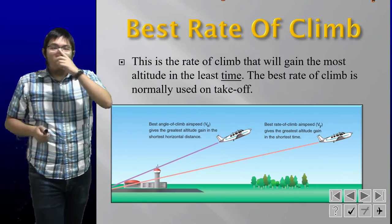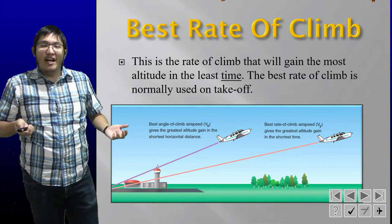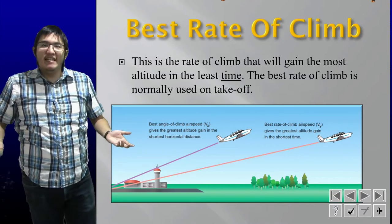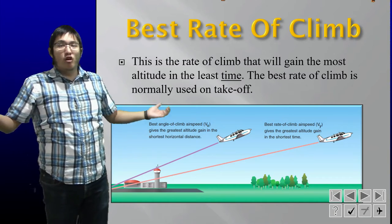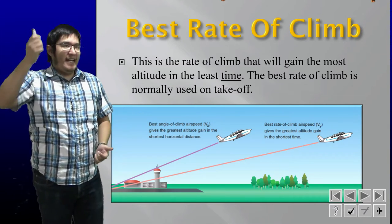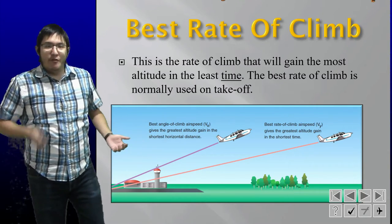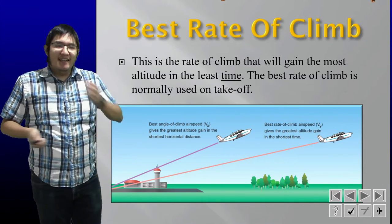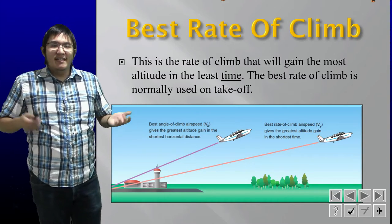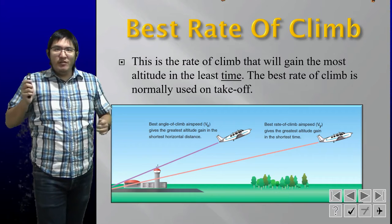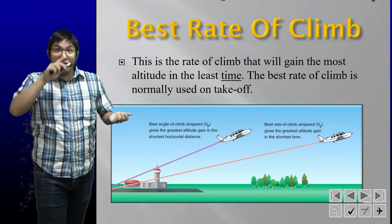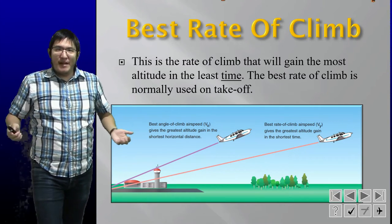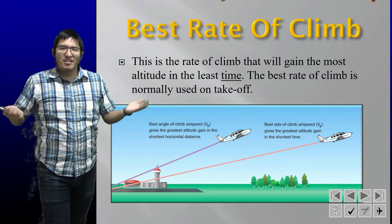Best rate of climb is the climb rate at which you gain the most altitude in the least amount of time. This is typically used on the takeoff roll and normal climb, because you want to get airborne as quickly as possible. This is also known as VY. In a Cessna, VY tends to be around 67 to 78 knots. Remember: Y is the vertical axis, so VY gives you your best vertical performance.